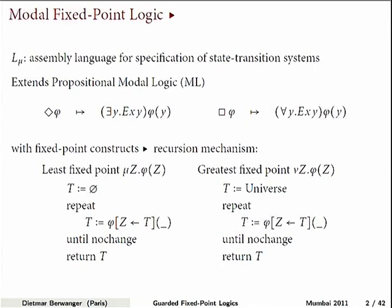The alternative is to start with the whole universe and apply the operator until nothing more happens. So we have a very weak local logic that talks about what happens to the current state and about the immediate successors, and then we have this simple recursion mechanism that lets us move local assertions along paths. That explains why it can be interesting for verification, because in verification we are very interested in executions, and this is what the mu-calculus can do well.